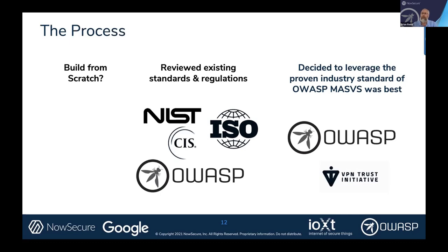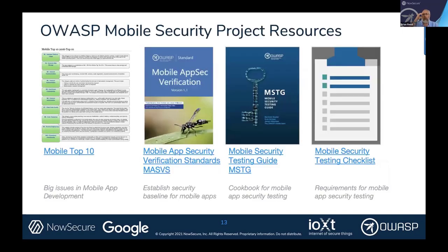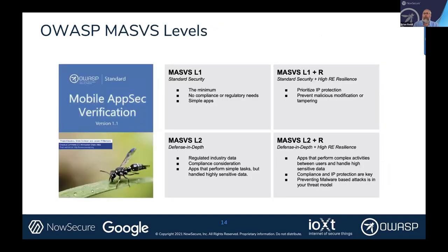As we started merging in the VPN work, we grabbed some core components from the VPN Trust Initiative as well. So we took a look at the OWASP project resources — clearly the MASVS and the MSTG are the core, evolved a lot since the OWASP Mobile Top 10. We started digging into that, and if you've been through the MASVS and MSTG, you'll be familiar with some of these things.